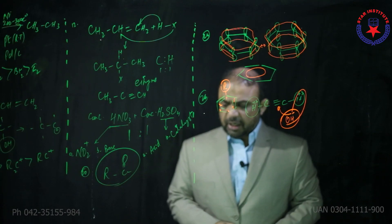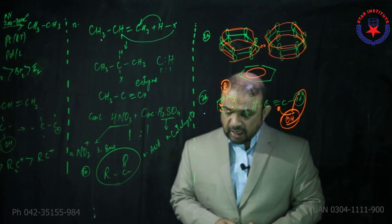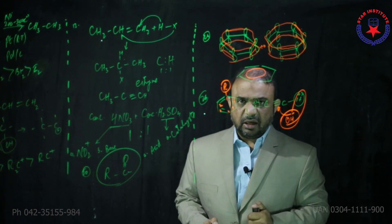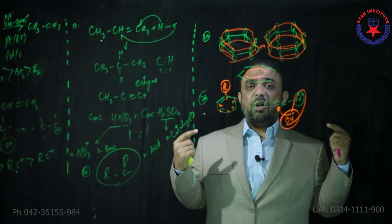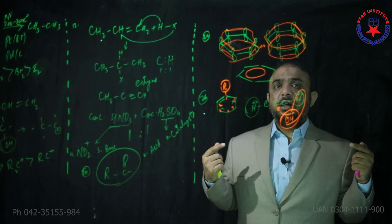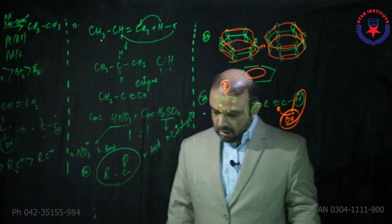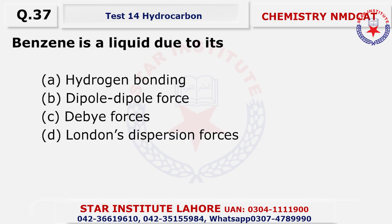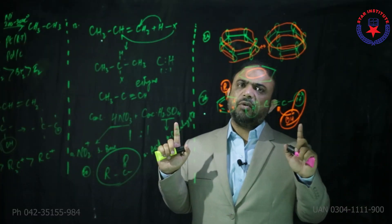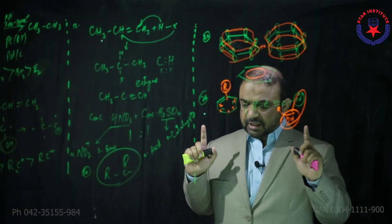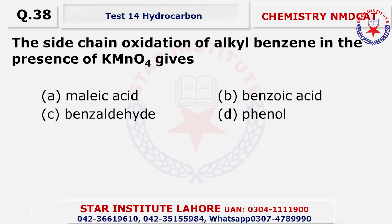Question 36: the Kekulé structure of benzene does not justify delocalization — it could not explain how delocalization was happening. This delocalization was justified by Molecular Orbital Theory (MOT). Question 37: benzene is a liquid due to non-polar molecules having only London dispersion forces. Choice is delta.